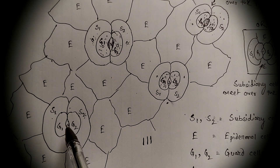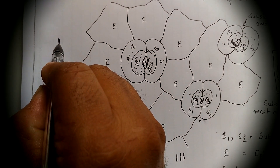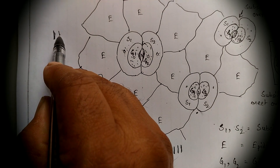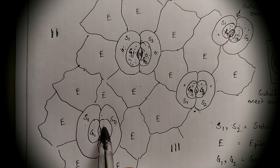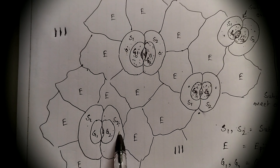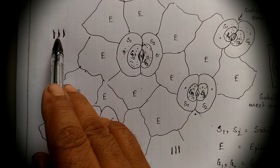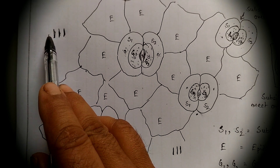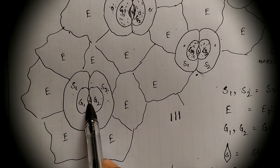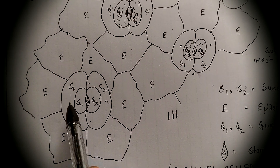Consider the axes of the stomatal pole. This one is the axis of the guard cell, and this one is the axis of the subsidiary cell. There are three axes in total, and these three are parallel to each other — that is, the axis of the stomatal aperture, the axis of the guard cells, and the axis of the subsidiary cells are all parallel to each other.